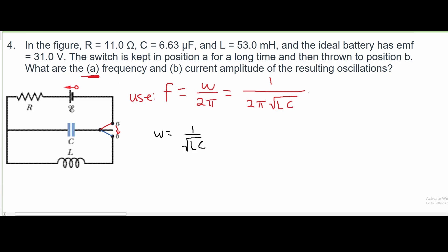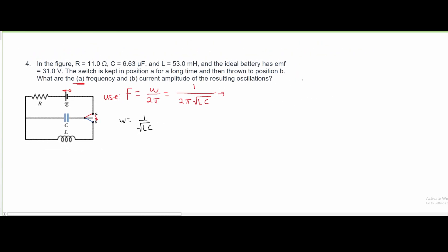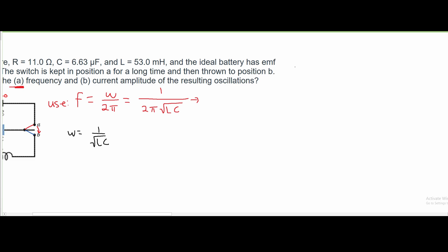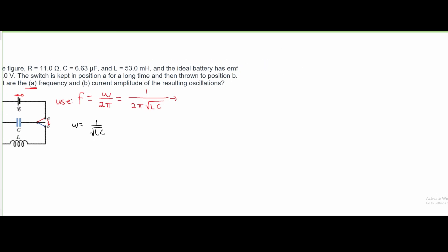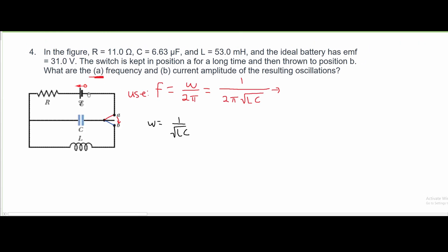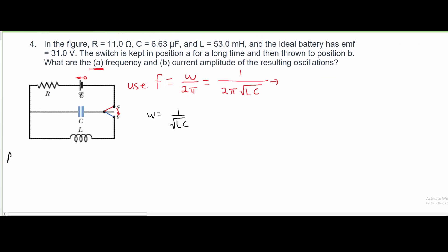From here, all we need to do is plug in our given values. We should write these values down at the start of the problem, just to make sure we know everything we're going to be using. We can first start by saying that our R is 11 ohms, our C is 6.63 microfarads, and our L is equal to 53 millihenries. Lastly, our EMF is equal to 31 volts.